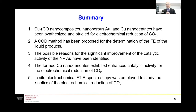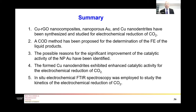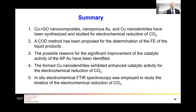In brief summary: we fabricated copper–reduced graphene oxide nanocomposites, nanoporous gold, and copper nanodendrites, and tested their performance for CO2 reduction. A chemical oxygen demand method was proposed for the determination of faradaic efficiency of liquid products. The possible reasons for the significant improvement in cathodic activity of nanoporous gold were identified. In-situ electrochemical FTIR spectroscopy was demonstrated for studying the kinetics of electrochemical CO2 reduction.